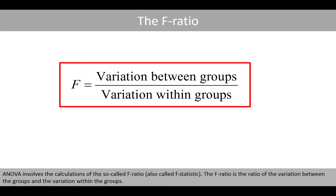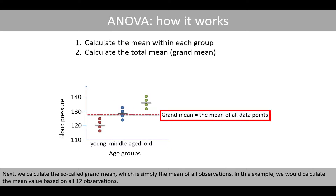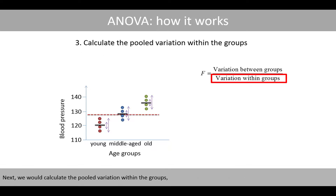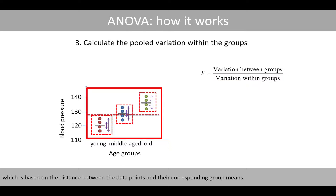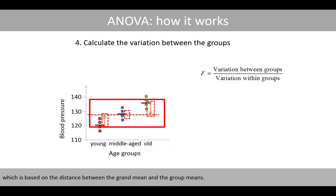ANOVA involves the calculation of the so-called F-ratio, also called F-statistic. The F-ratio is the ratio of the variation between the groups and the variation within the groups. The first step in ANOVA calculations is to calculate the mean within the groups. In this example, we would simply calculate the mean of the four observations in each of the three groups. Next, we calculate the so-called grand mean, which is simply the mean of all observations. In this example, we would calculate the mean value based on the 12 observations. Next, we calculate the pooled variation within the groups, which is based on the distance between the data points and their corresponding group means. Finally, we would estimate the variation between the groups, which is based on the distance between the grand mean and the group means.